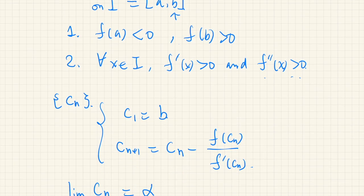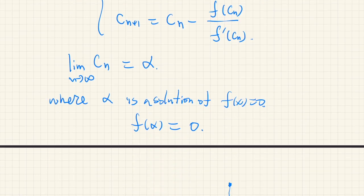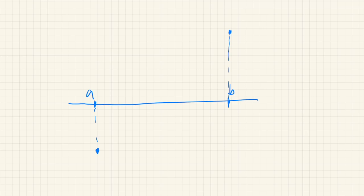We're also assuming that the derivative is always positive in this interval and the second derivative is also positive. The first derivative being positive means the function is monotone increasing, and the second derivative always being positive means it's convex. So it should look something like this — convex and monotone increasing.